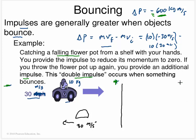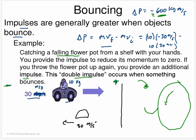A practical application of this is a mill wheel. If water falls into the wheel and splashes back out, the larger impulse produces a larger force, so the wheel turns faster. They actually knew this when they built many of the old mills.